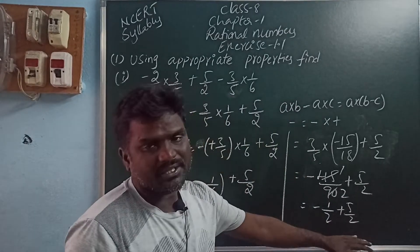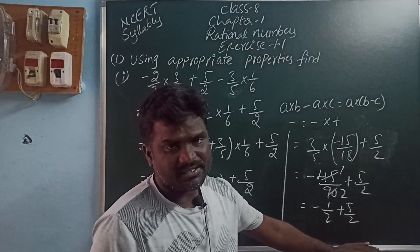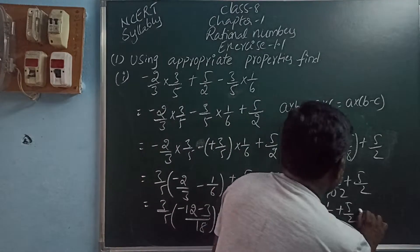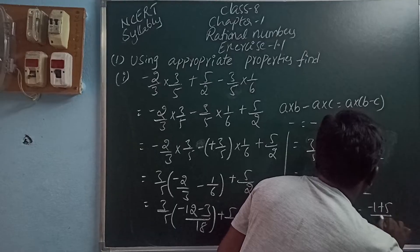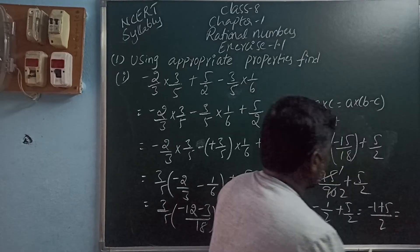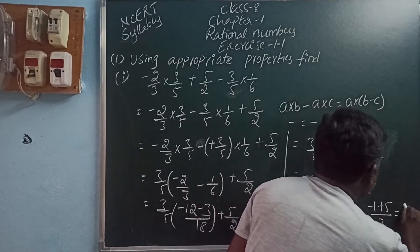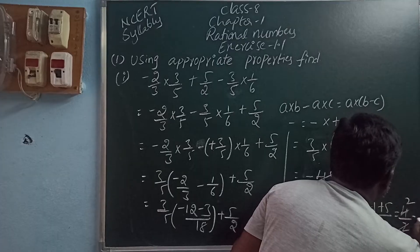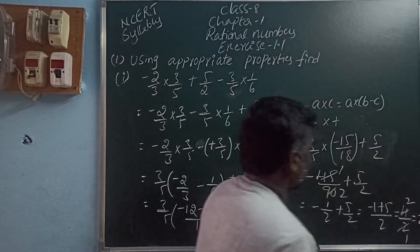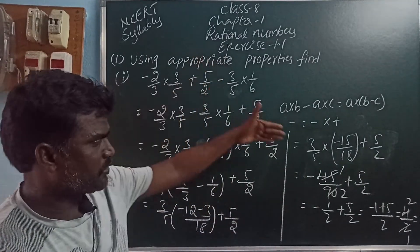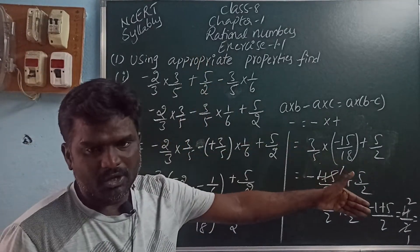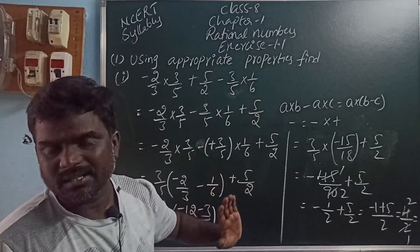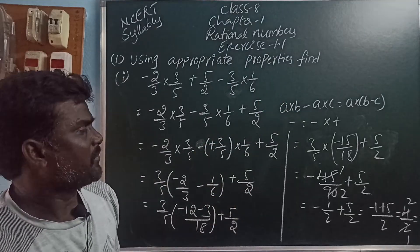These two are like fractions. Write the common denominator and add the numerators: minus 1 plus 5 by 2. So minus 1 plus 5 is 4. 4 by 2 is 2. The value of this problem is 2. Here we used the distributive property and closure property.